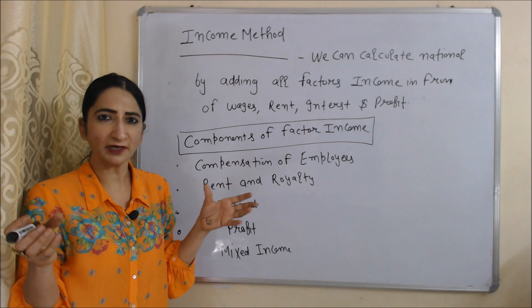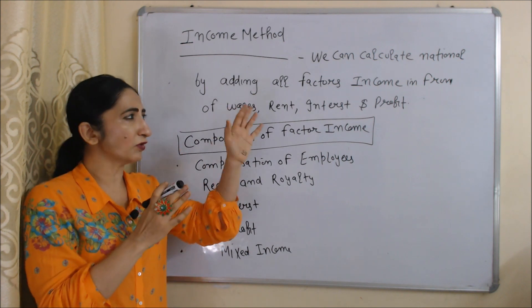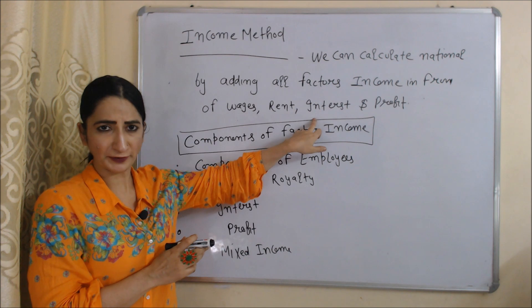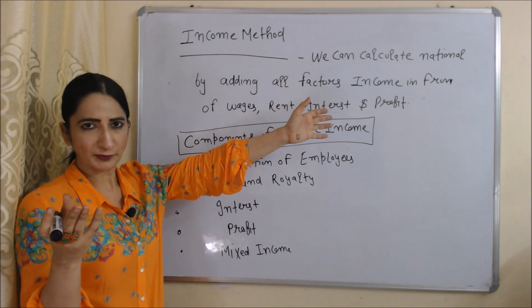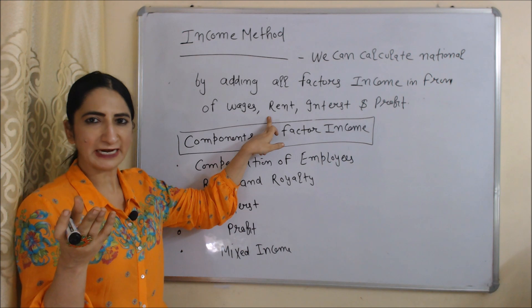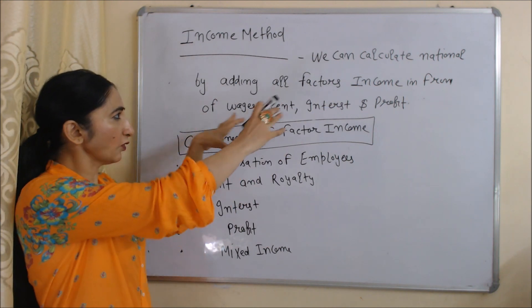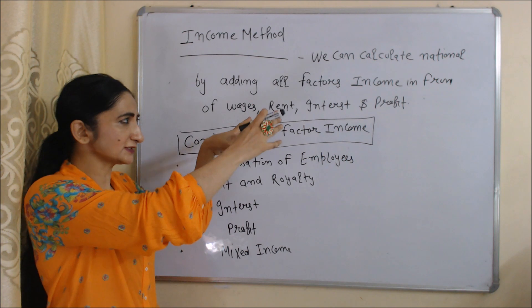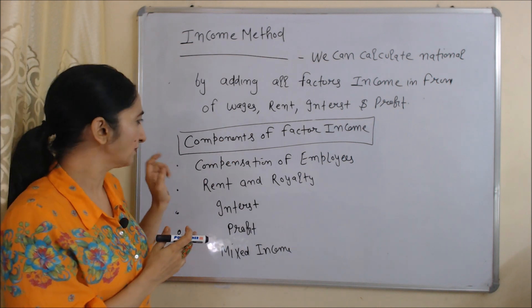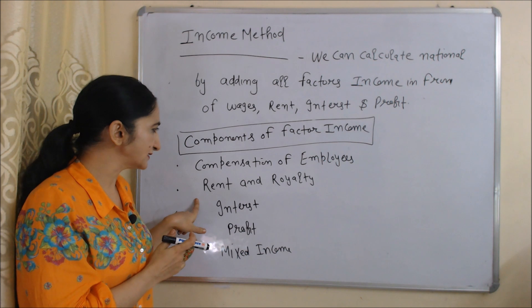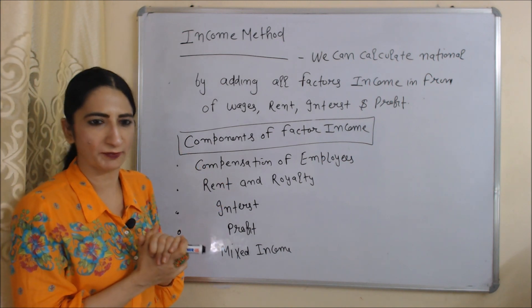Now we are going to talk about the Income Method to calculate national income. According to this method, we can calculate national income by adding all factor incomes in the form of wages, rent, interest, and profit. There are mainly four factors of production: labor, land, capital, and entrepreneurship. Income of labor is wages, income of land is rent, income of capital is interest, and income of entrepreneurship is profit. There are mainly five components of factor income.